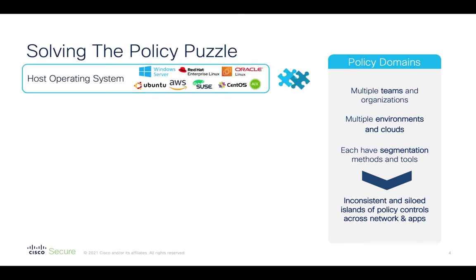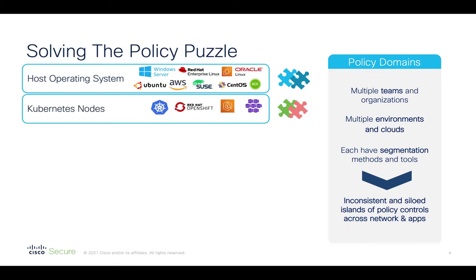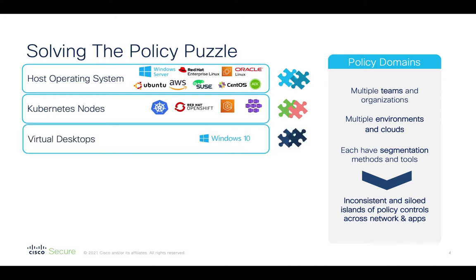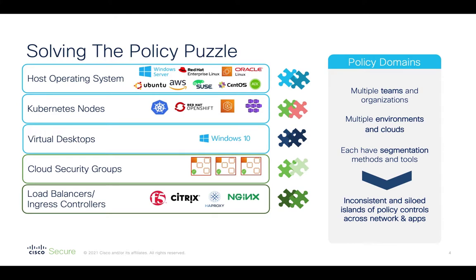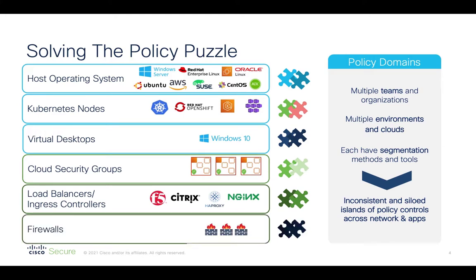For example, we have embedded host firewalls for Windows using either Windows Advanced Firewall or Windows Filtering Platform. We have Linux IP tables, IP set, and AX IP filters. There are also newer workload constructs for container orchestration — for example, Kubernetes — and this can be self-managed or cloud-managed. We have virtual desktop environments localized in the data center, native cloud security constructs such as AWS security groups, load balancers and ingress controllers, and we have firewalls. This often leaves inconsistency across the network and brings islands of siloed policy controls.